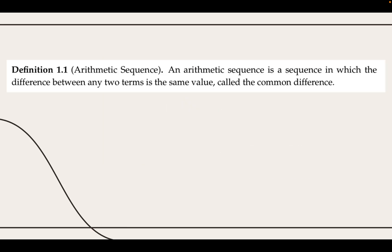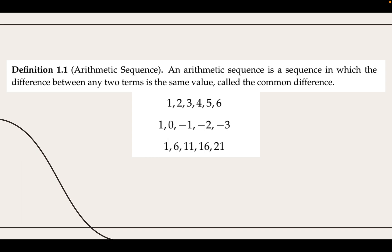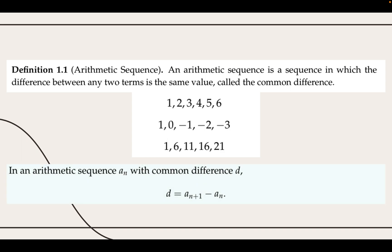We begin by defining an arithmetic sequence as a sequence in which the difference between any two consecutive numbers is the same value. This value is called the common difference, which can be any number. For example, the three sequences listed here are all arithmetic sequences with common differences of 1, negative 1, and 5 respectively. An important thing to note is that the common difference remains constant between all adjacent terms.